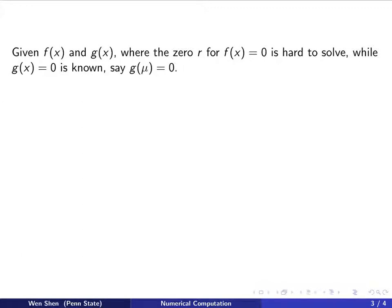Let's say we are given a function f(x) and another one g(x). Here, the zero for f(x) is hard to solve, while for the function g, the zero is known. Let's say g of mu is zero.